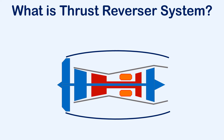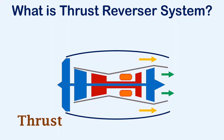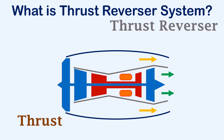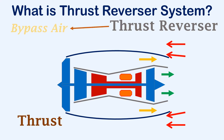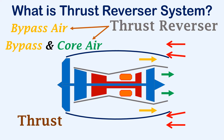If we consider a turbofan engine, the thrust force is produced by pushing the air that is entering the engine backwards. The thrust reverser system creates a backward force by pushing the air that is entering the engine forward. Depending on the type of thrust reverser system, the bypass air or both the bypass and the core air may be pushed forward.